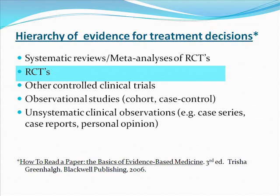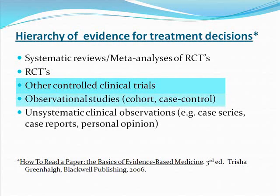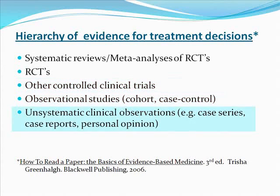If one fails to find a meta-analysis or RCT, one might have to rely on weaker forms of evidence, such as non-randomized clinical trials or observational studies. The weakest form of evidence are case series reports and individual case reports. For some questions, there may be no published evidence at all.